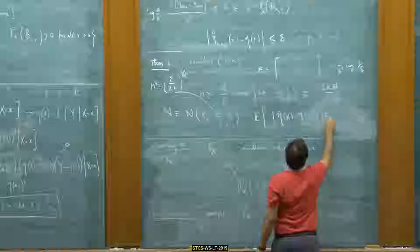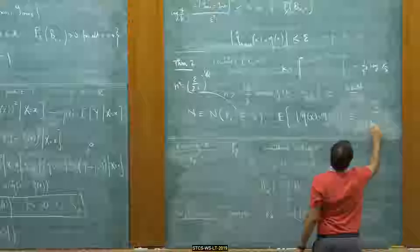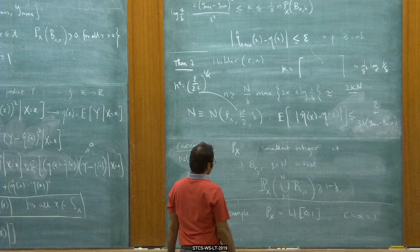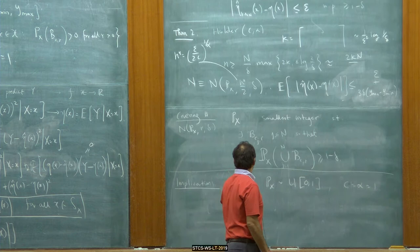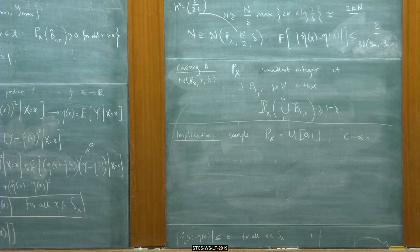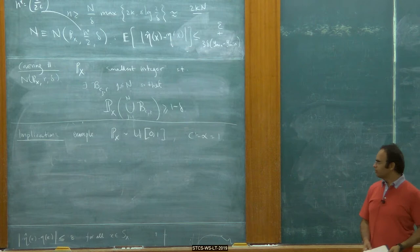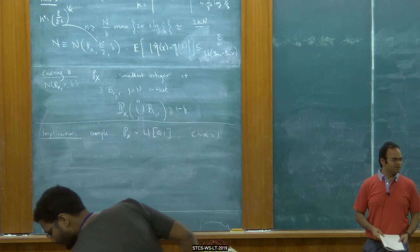This was less than or equal to epsilon plus three delta times Y-max minus Y-min. So in some way, these are non-parametric methods. Non-parametric methods don't usually have generalization bounds of this form, because you would try to net the space of models rather than this approach — so maybe this is a step towards that, but that would be too lofty to say.